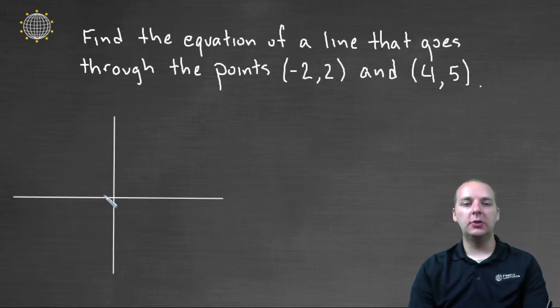So what they've done is they've given us two points, negative two, two, which is right here, and four, five, which is right here.